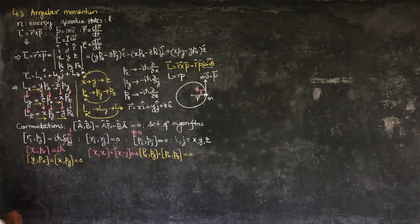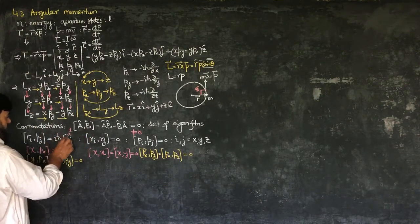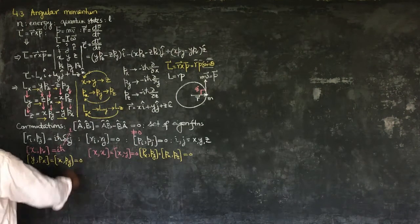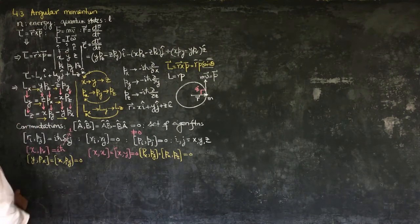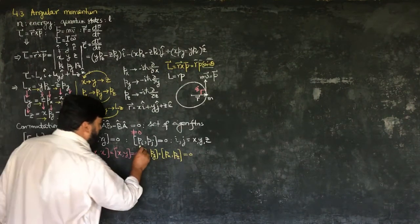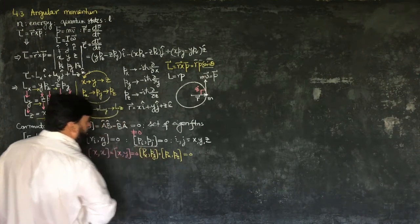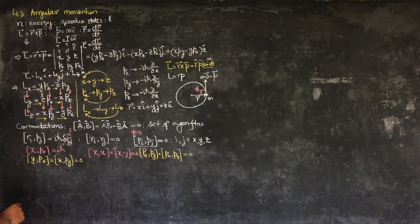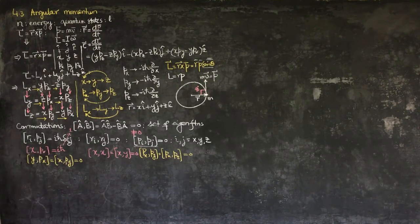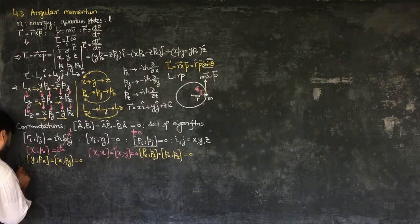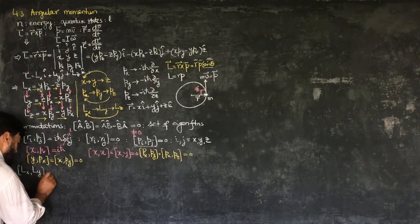With all this data and the commutation relations in mind, we now check whether the components of angular momentum commute with each other. The angular momentum components involve both R and P, so we need to verify their commutation. Let's start by finding the commutation of Lx with the other components.